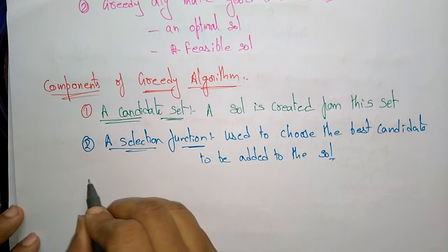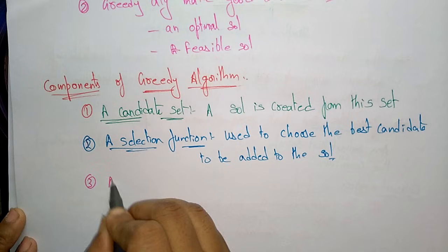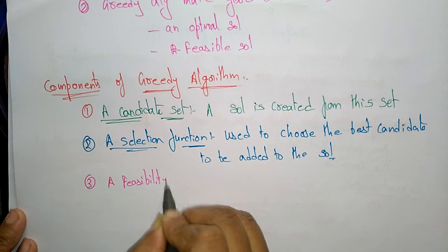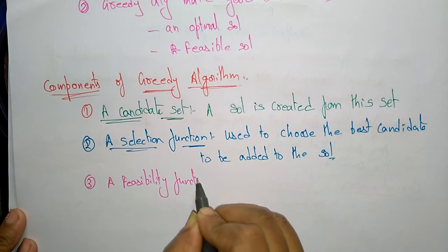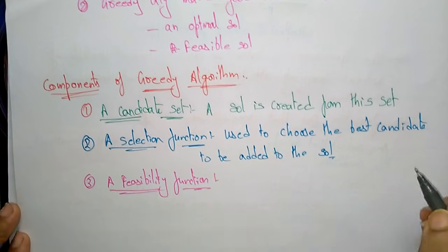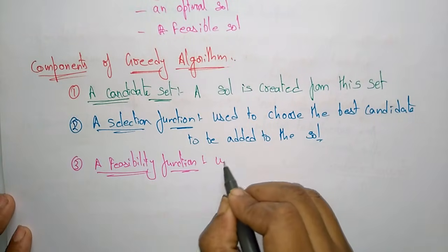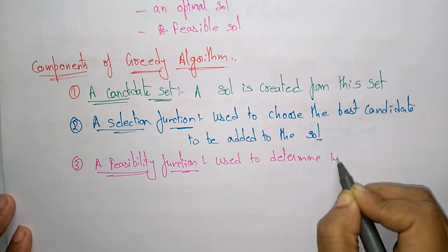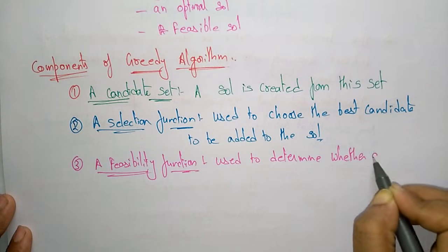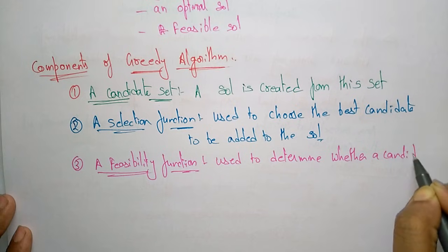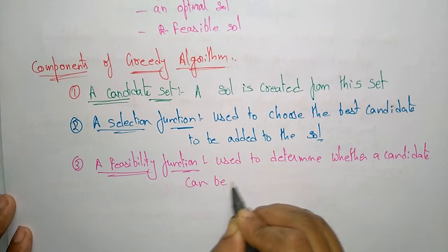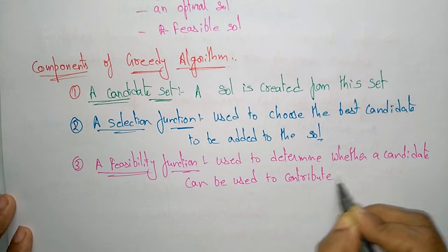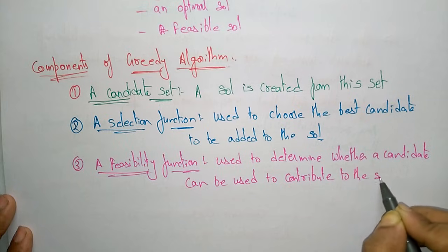The third component is the Feasibility Function. The feasibility function is used to determine whether a candidate can be used to contribute to the solution — it decides if a given candidate is usable.